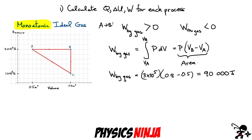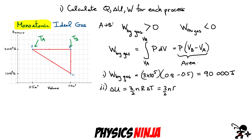Next, let's calculate ΔU, the change in internal energy. Since it's a monoatomic gas, ΔU = (3/2)NR·ΔT. We need the temperatures at points A and B, but actually we don't need them explicitly. Expanding: ΔU = (3/2)NR(T_B − T_A). Using the ideal gas law PV = NRT, we can write NRT_B = P_B·V_B, so we can rewrite ΔU in terms of pressure and volume.